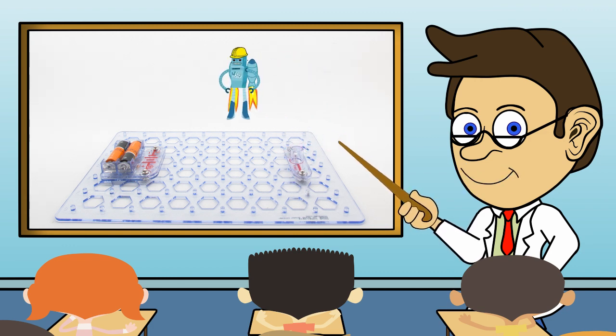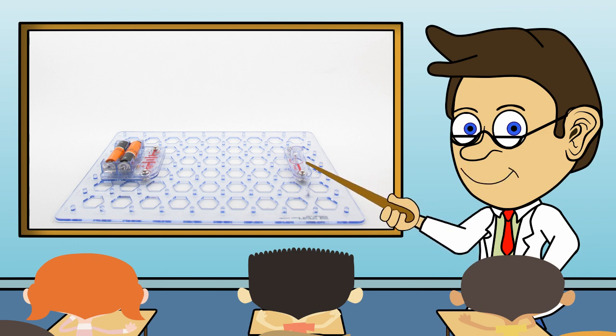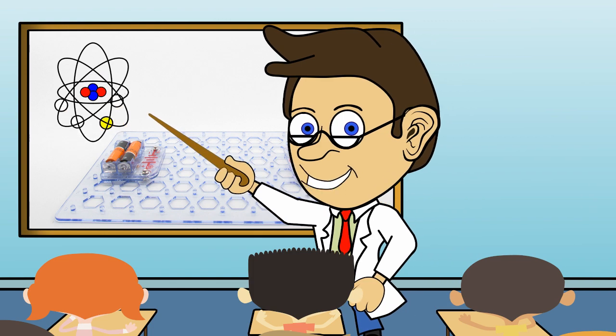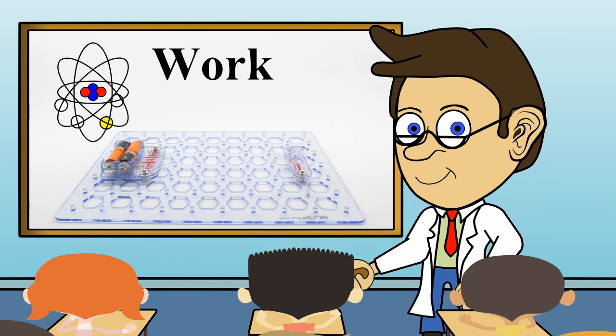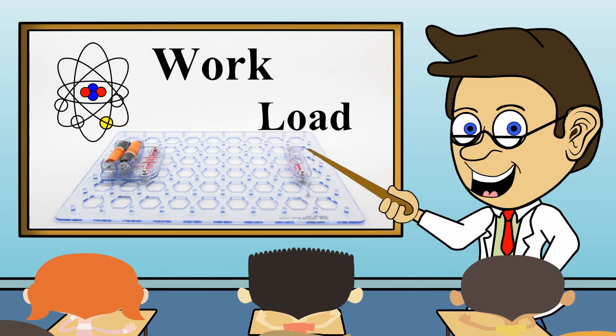The work in our experiment will be illuminating or lighting up the small lamp. So let us review what we have learned so far. Electrical energy gives us the power we need to do work in our circuit. The load is the thing that uses the power to do the work.